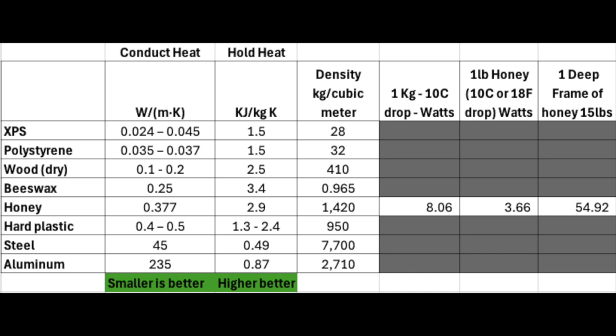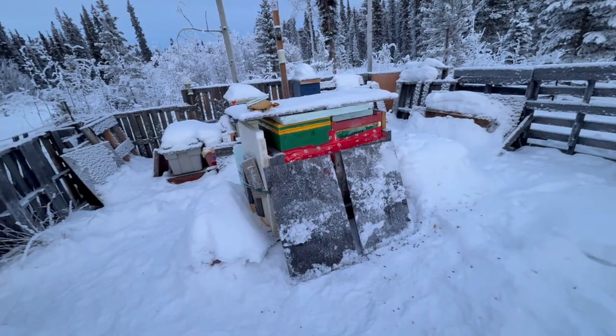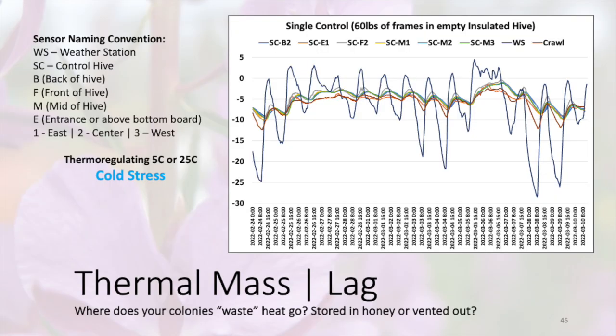For example, a deep frame of honey weighs about 15 pounds. If that dropped by 10 degrees Celsius, it released around 54 watts, which is quite a bit. You can see how that dampens down large temperature fluctuations — so honey is your friend.